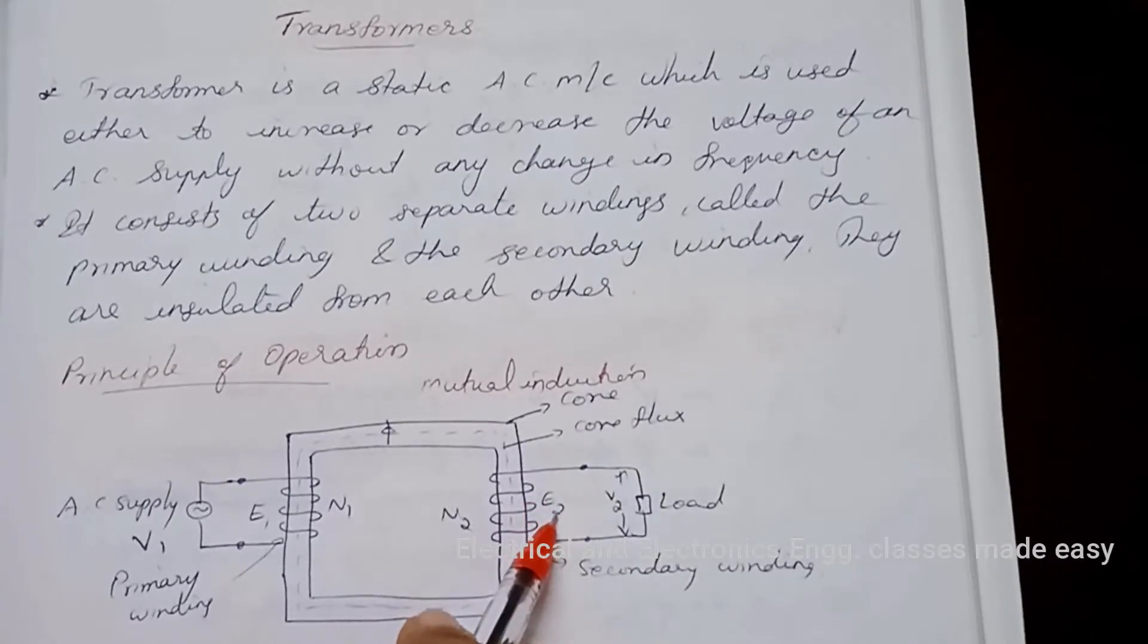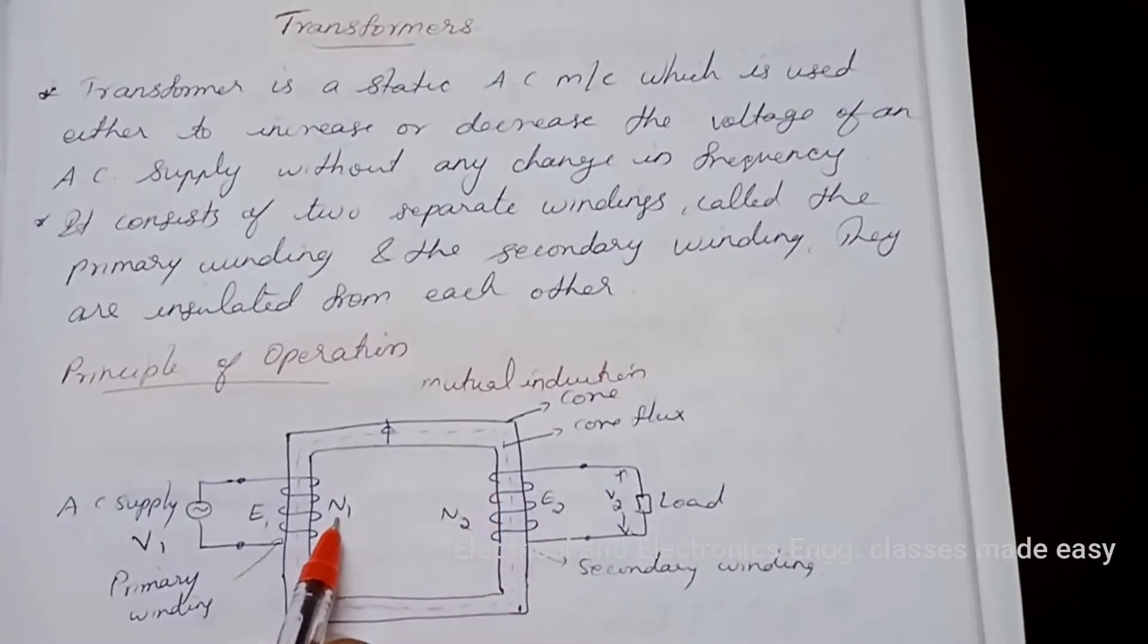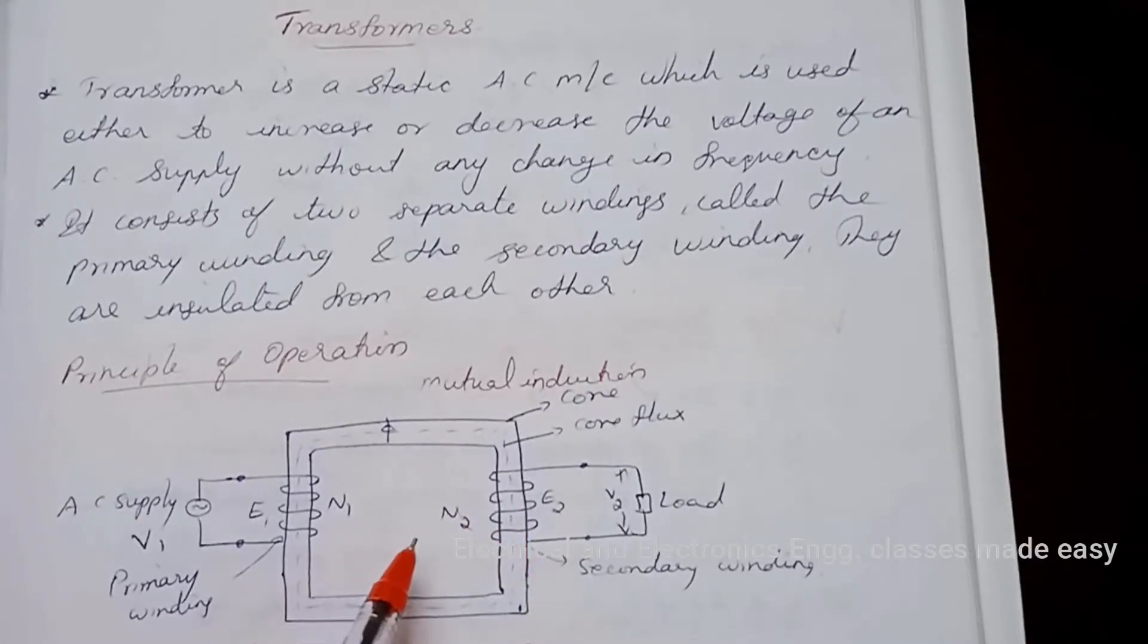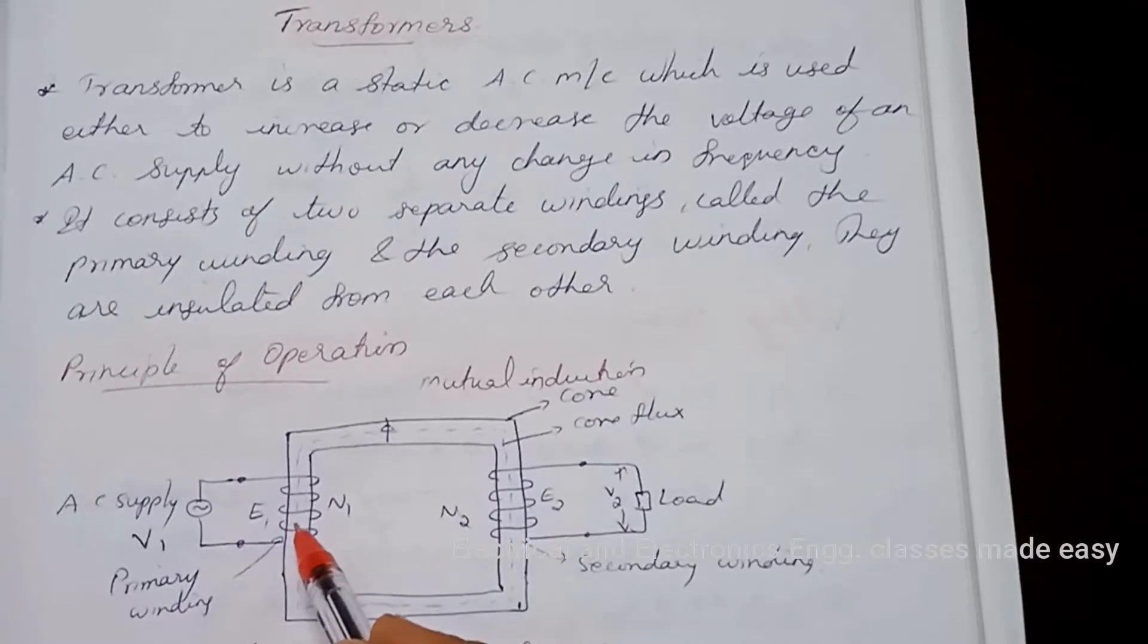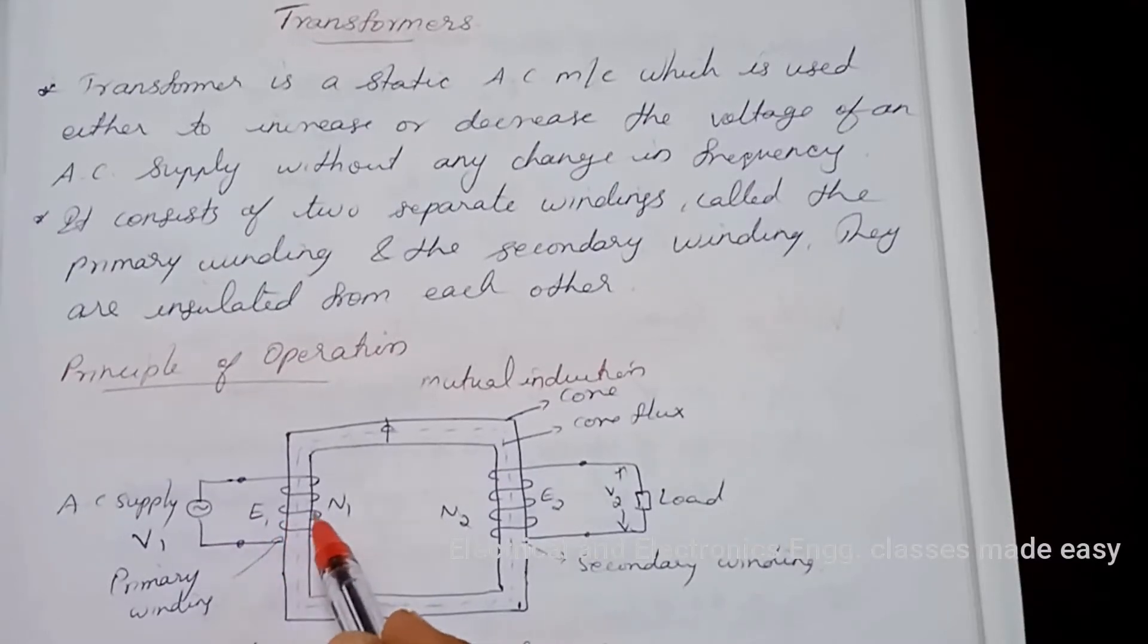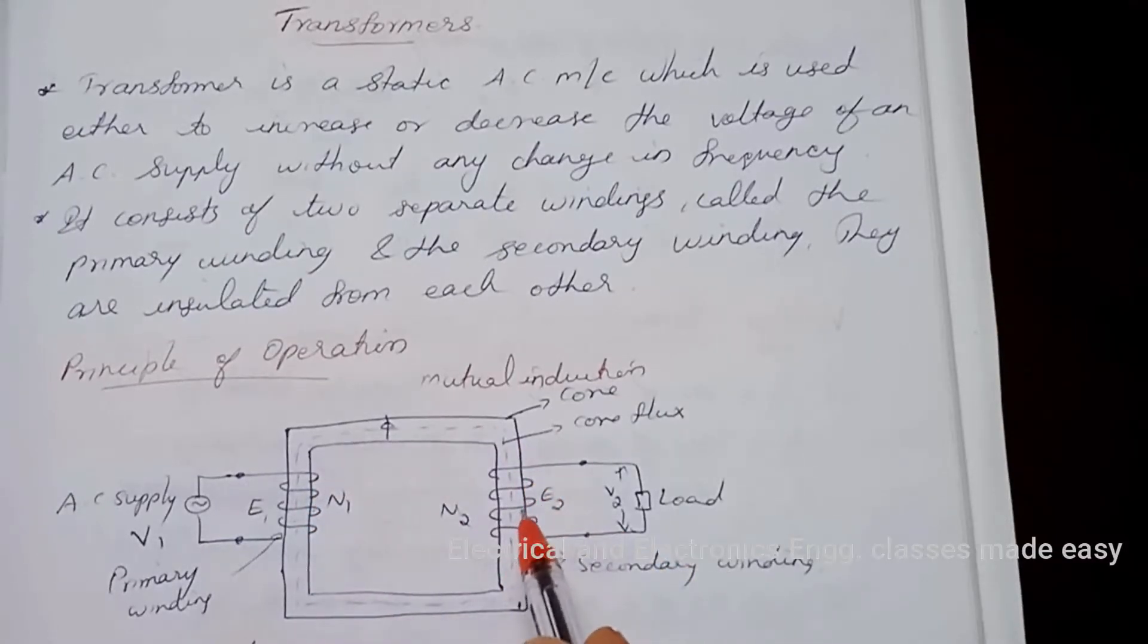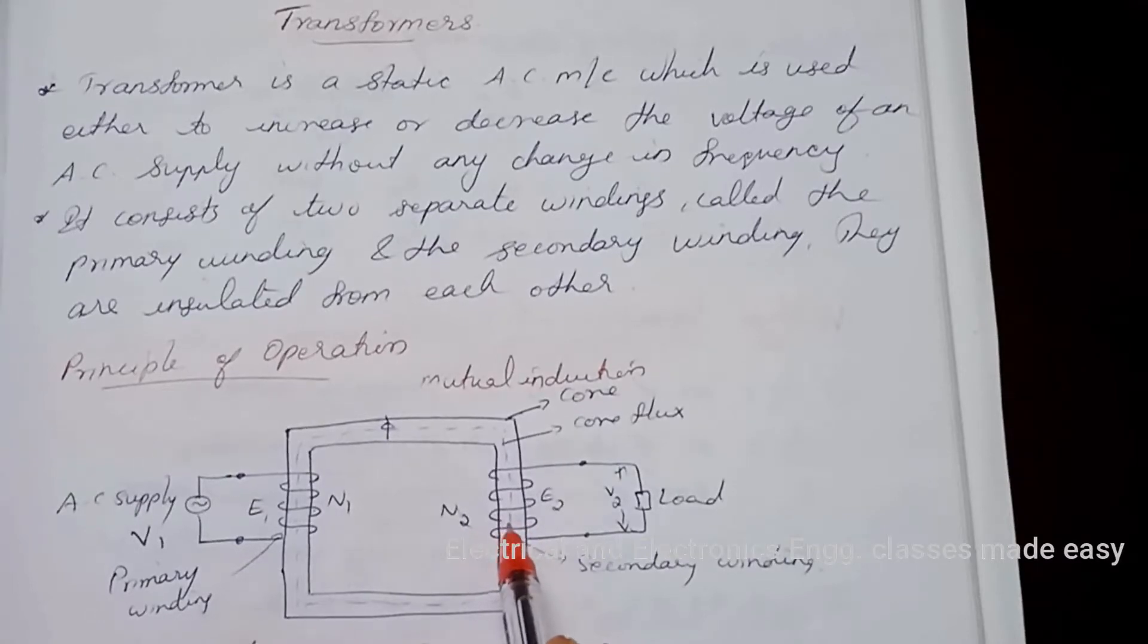Depending upon the number of turns of the primary and secondary, an alternating voltage or EMF of E2 is induced in the secondary. The two windings are bound on the same core. When the primary winding is connected to AC supply, an alternating flux is produced in it. The alternating flux in the primary winding also links with the secondary winding through the body of core.